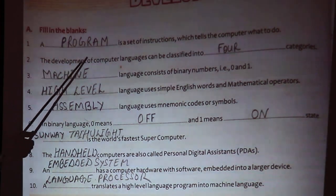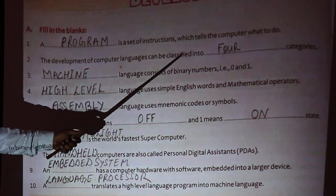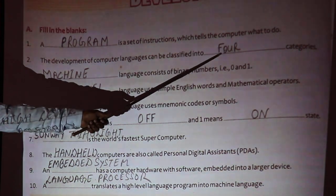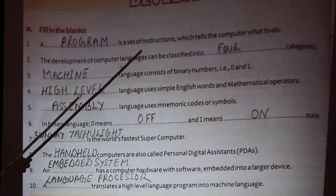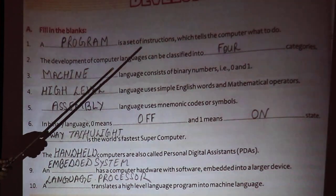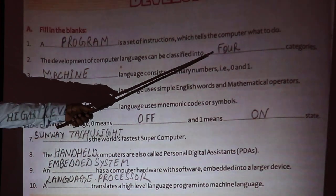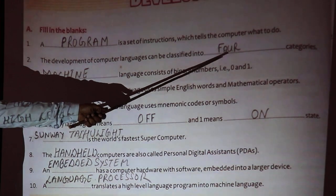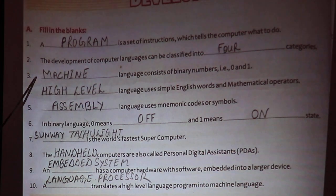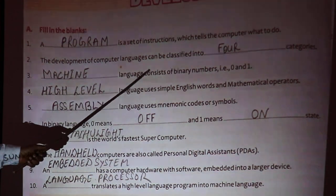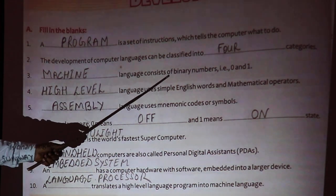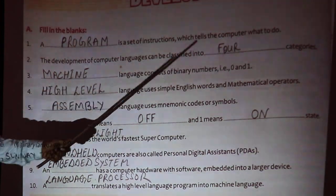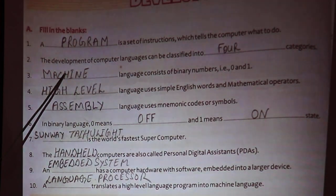The development of computer language can be classified into 4 categories. We have discussed: supercomputer, mainframe computer, and microcomputer. Language consisting of binary numbers, i.e. 0 and 1, is machine language.